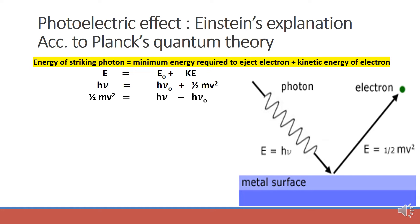We can relate all three as: energy of striking photon = threshold energy + kinetic energy of the electron, symbolically E = E₀ + KE. According to Planck's quantum theory, energy is directly proportional to frequency, so E = hν and threshold energy = hν₀, where ν₀ is the threshold frequency. The specific frequency photon can eject electrons and the KE can be represented by ½mv². In terms of wavelength, kinetic energy = hc(1/λ − 1/λ₀). By using this formula we can solve various calculations.